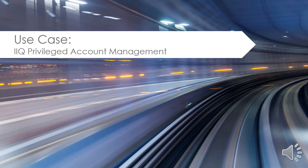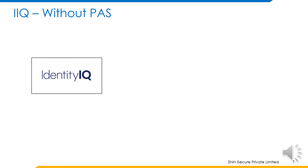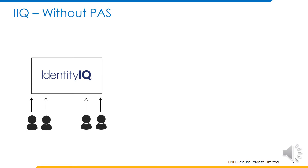Next we will understand the current use case. IdentityIQ, without a privileged account security solution, is available for users to log in directly. This is also applicable for privileged account users like SPAdmin, or any other user with system administration capabilities. This is, however, not a secure way of logging in.